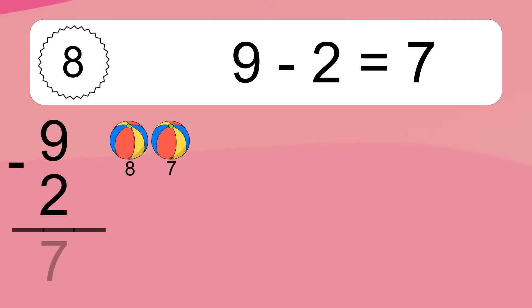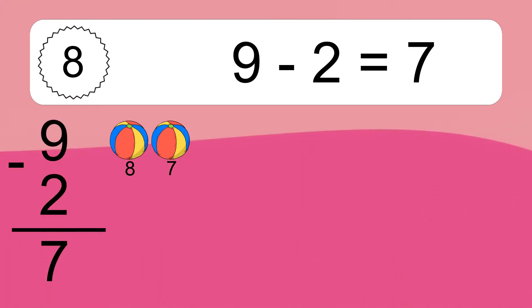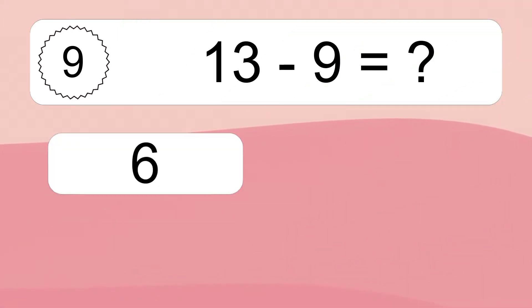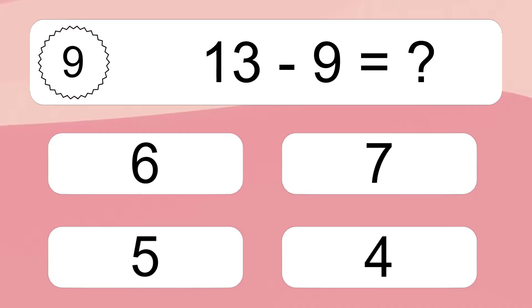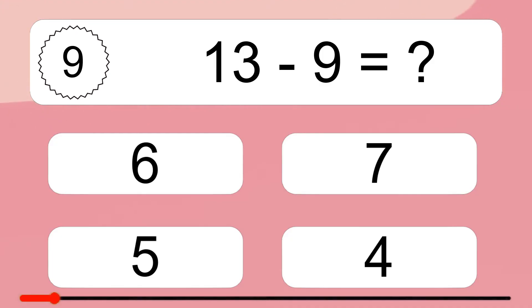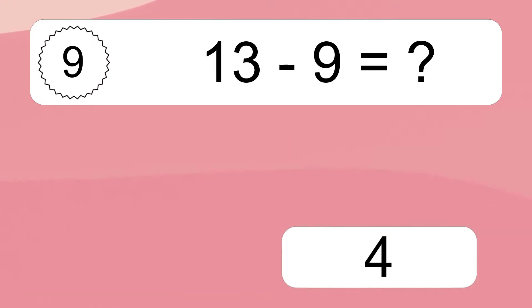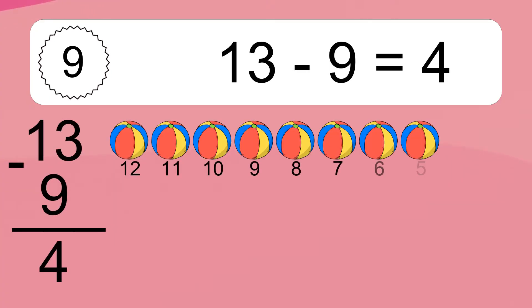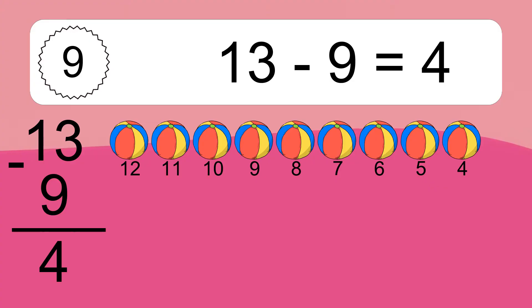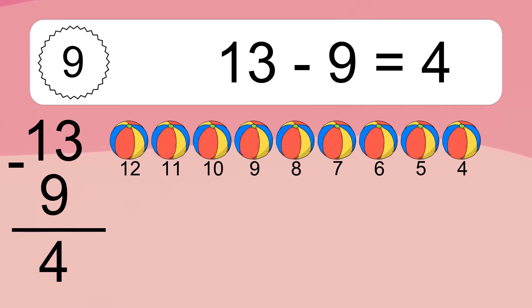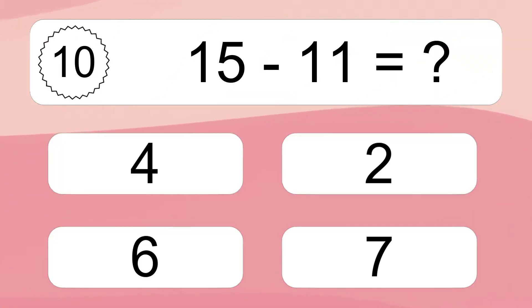9 minus 2 equals 7. Let's count it: 8, 7. 13 minus 9 equals what?